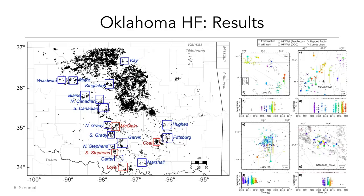Is there a type of earthquake — strike slip, et cetera — that occurs more often from induced seismicity? In Oklahoma, induced earthquakes are predominantly strike slip. These earthquakes tend to occur in the basement on faults with very little vertical offset, so they're nearly impossible to identify even with active seismic surveys before causing seismicity. In general, most induced earthquakes in the United States are strike slip. In China, the post-hydraulic fracturing earthquakes were a combination of strike slip and reverse, but predominantly strike slip in the United States.